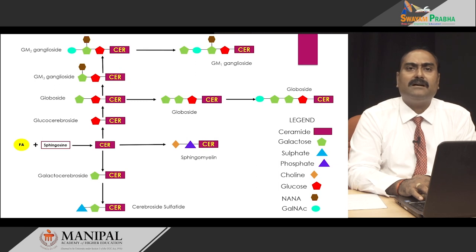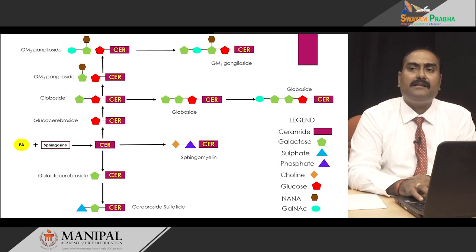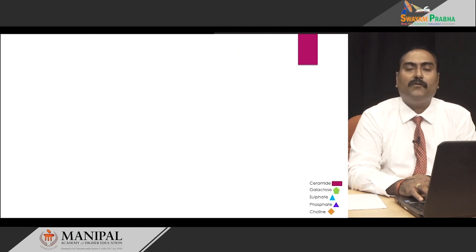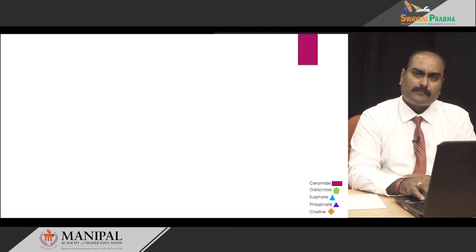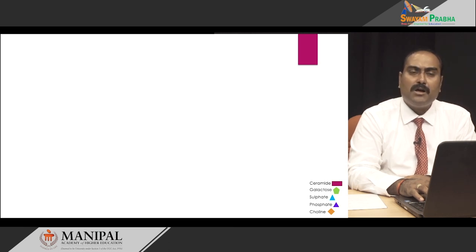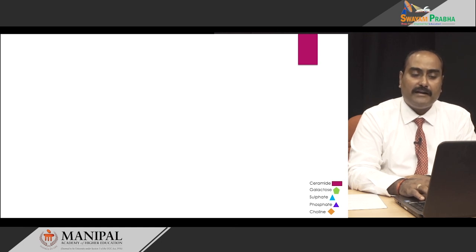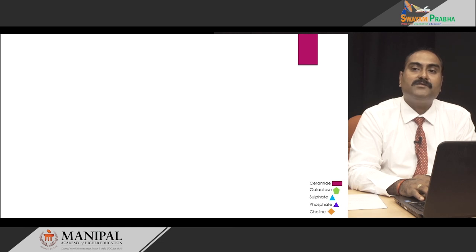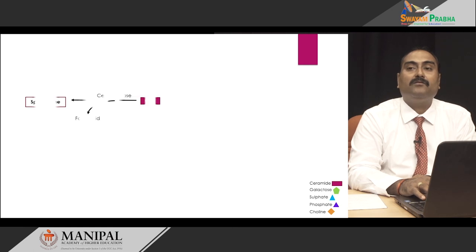Sphingolipids are synthesized in the endoplasmic reticulum and the Golgi complex, and they are enriched in the plasma membrane where they carry out their function. Generally there is no disorder affecting their biosynthesis, but there are certain disorders that affect the breakdown of these sphingophospholipids. The disorders of sphingolipids generally affect degradation that is happening in the lysosomes — the site of degradation. They are re-transported back into the lysosome through the endolysosomal pathway, where lysosomal hydrolases are responsible for breaking them down. Let us look at the different enzymes responsible for breaking down sphingolipids.